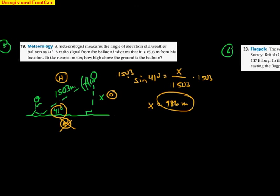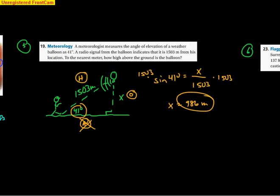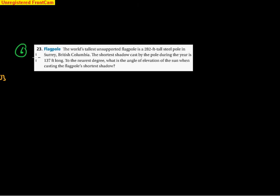If the variable is in the denominator, remember it takes two steps: multiply by the variable, then divide by the trig function.